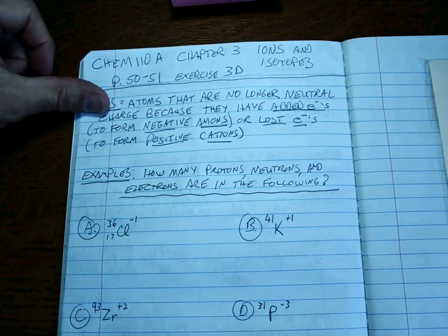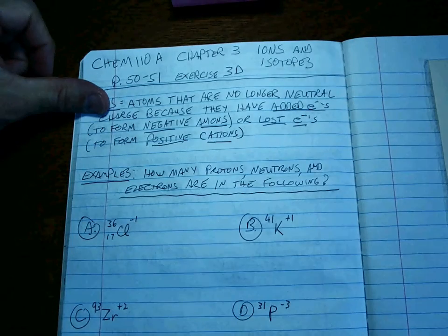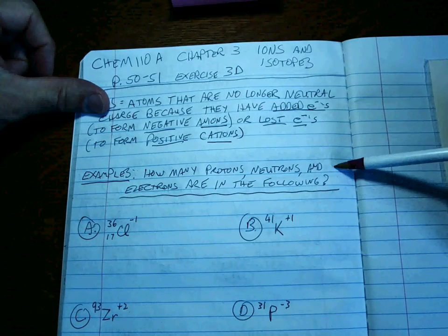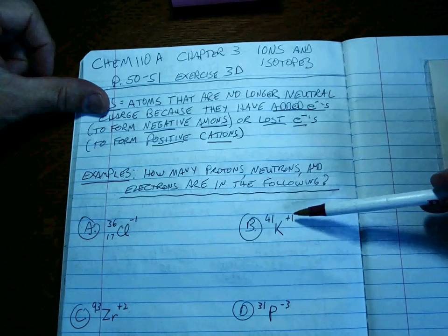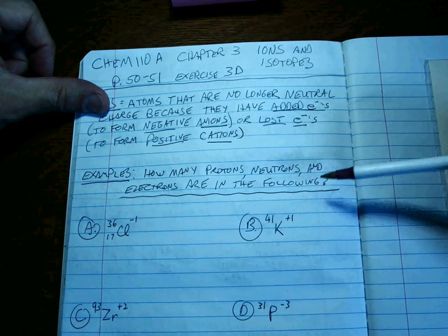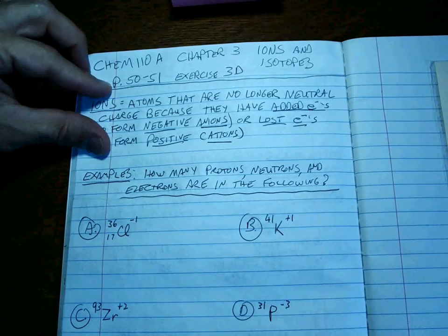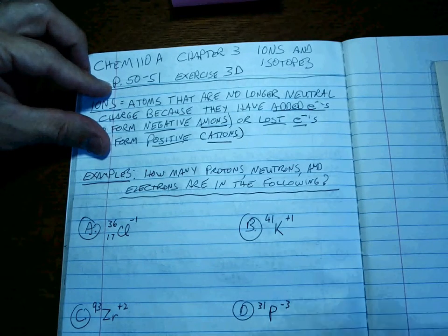We'll talk more in the next lesson about how and why these charges form, but for right now, we're going to look at charged isotopes and figure out all the subatomic particles. Same business as before, we just have to do an extra thought process for figuring out the electrons.